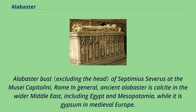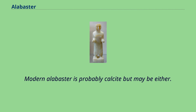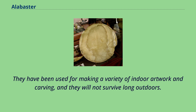Alabaster bust of Septimius Severus at the Musée Capitoline, Rome. In general, ancient alabaster is calcite in the wider Middle East, including Egypt and Mesopotamia, while it is gypsum in medieval Europe. Modern alabaster is probably calcite but may be either. Both are easy to work and slightly soluble in water. They have been used for making a variety of indoor artwork and carving, and they will not survive long outdoors.